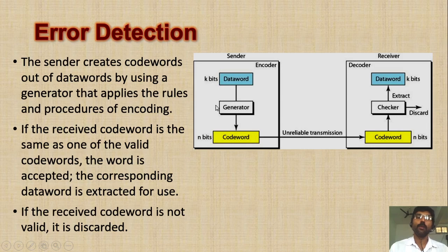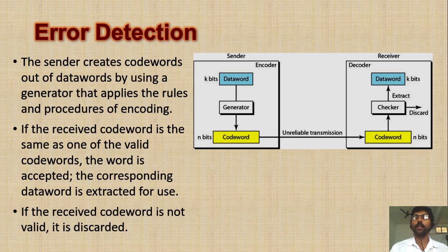What the generator will do? It will convert the data word into a codeword. For each data word, there is a specific codeword that it will convert into. At the receiving end, it will check — it will take the codeword from the receiver and check with the list of valid codewords. If the received codeword is matched with a valid codeword, it will extract the redundant bits from the codeword, create a data word, and send it to the receiver end.